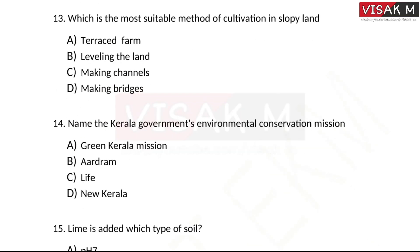Next question: what is the most suitable method of cultivation in slope or hilly land? The answer relates to terrace farming, which is the recommended cultivation method for reducing soil erosion on sloped terrain.